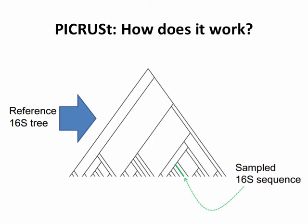Let's talk about how PICRUSt actually works. You can imagine our 16S ribosomal RNA tree where each tip represents a single sequence or OTU. We know that in our sampling we find a 16S sequence out of this big tree — the tree is probably about 200,000 tips now, depending on the database.